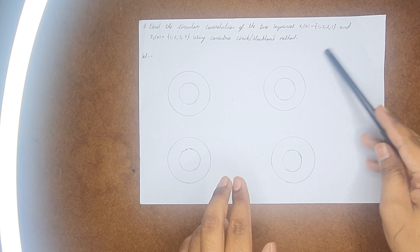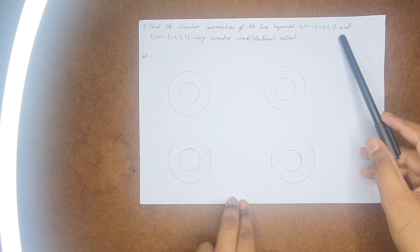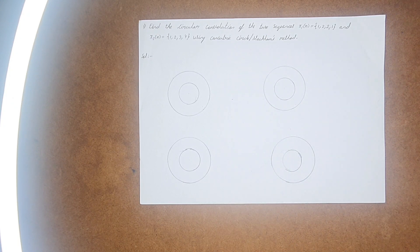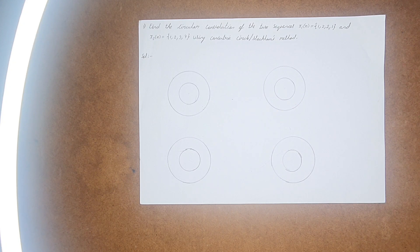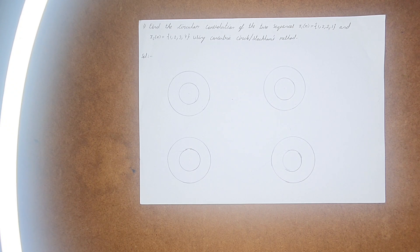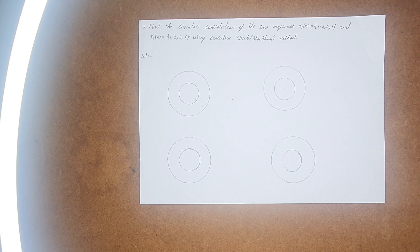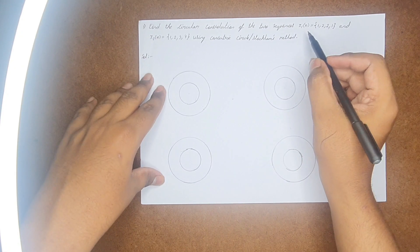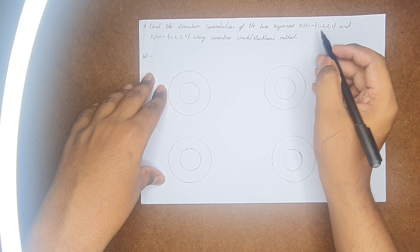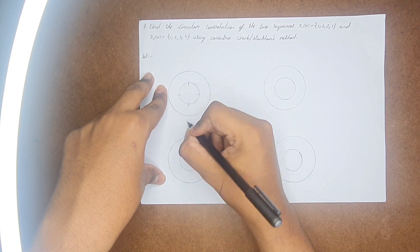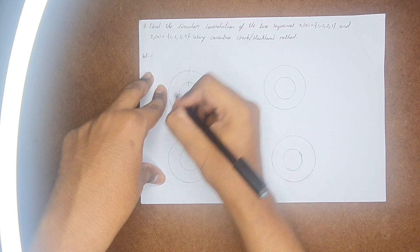So how will you be doing this then? First of all, as we have four sequences, total we get four outputs. y(n) will have four values: y(0), y(1), y(2), and y(3). So I have drawn four concentric circles. In the inner circle, you need to include the first sequence, that is your x1(n). How you'll be including this? You need to divide this into four parts, like this. Same thing you do with the outer circle.